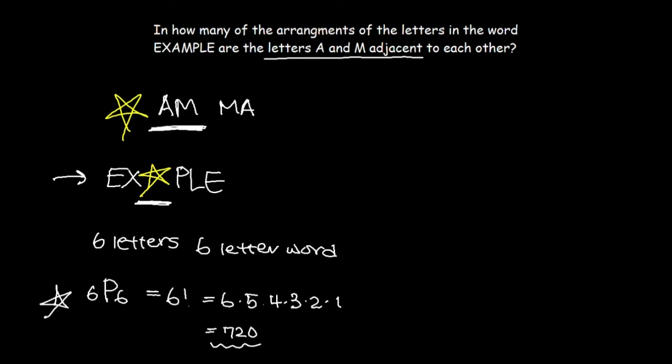Well, that's not the case in this question. Because remember, in my last video, I talked about if there are two same letters like this, you have to always divide by two factorial. Why? Because E sub 1 XAMPLE sub 2 is the same thing as E sub 2 XAMPLE sub 1.